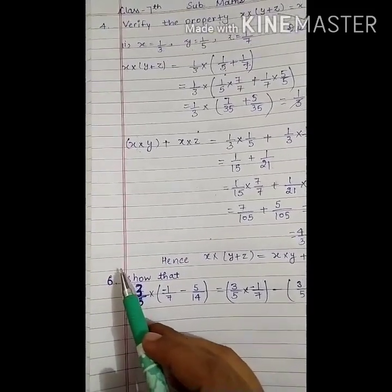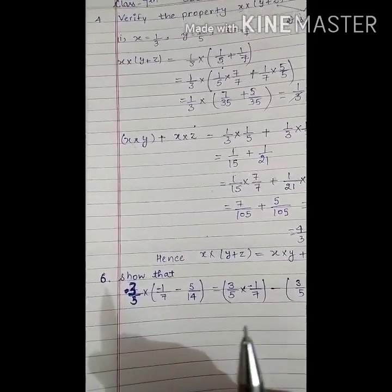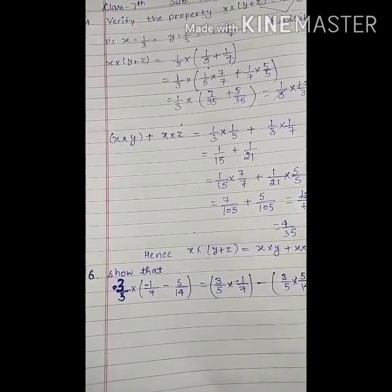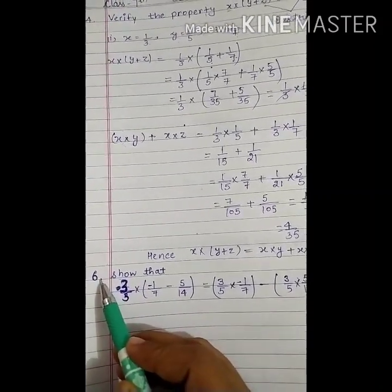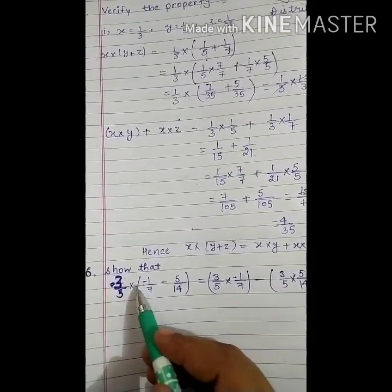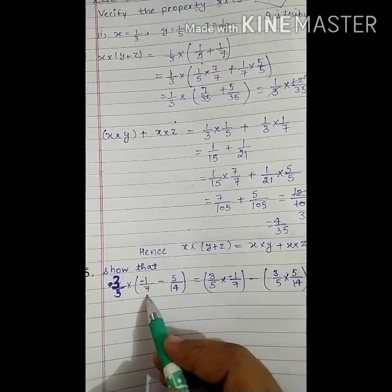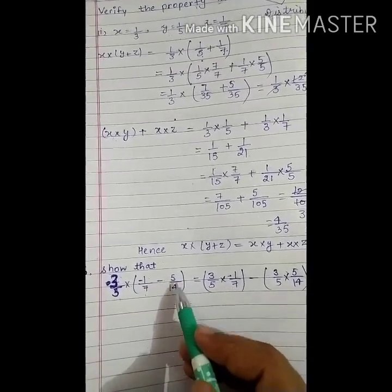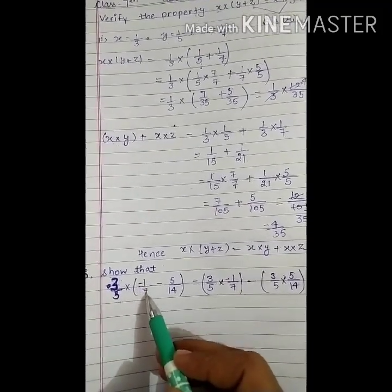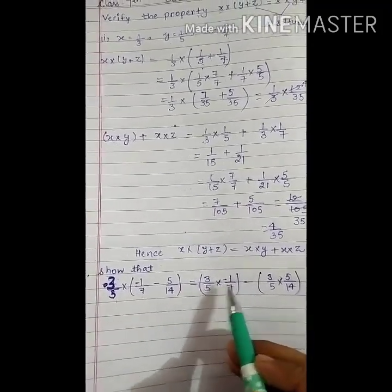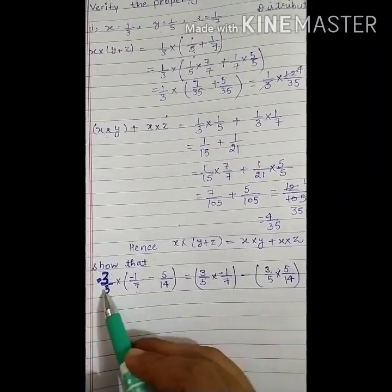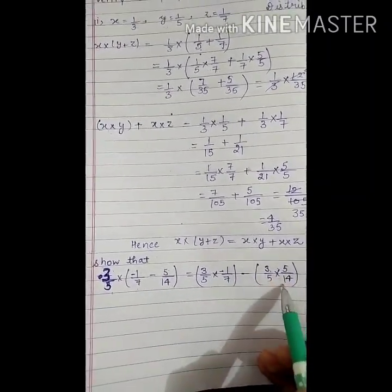Question number 5 is also based on distributive property over addition — you can solve it yourself. Now question number 6 is: show that 3 upon 5 multiplied by (minus 1 upon 7 minus 5 upon 14) is equal to 3 upon 5 multiplied by 1 upon 7 minus 3 upon 5 multiplied by 5 upon 14.